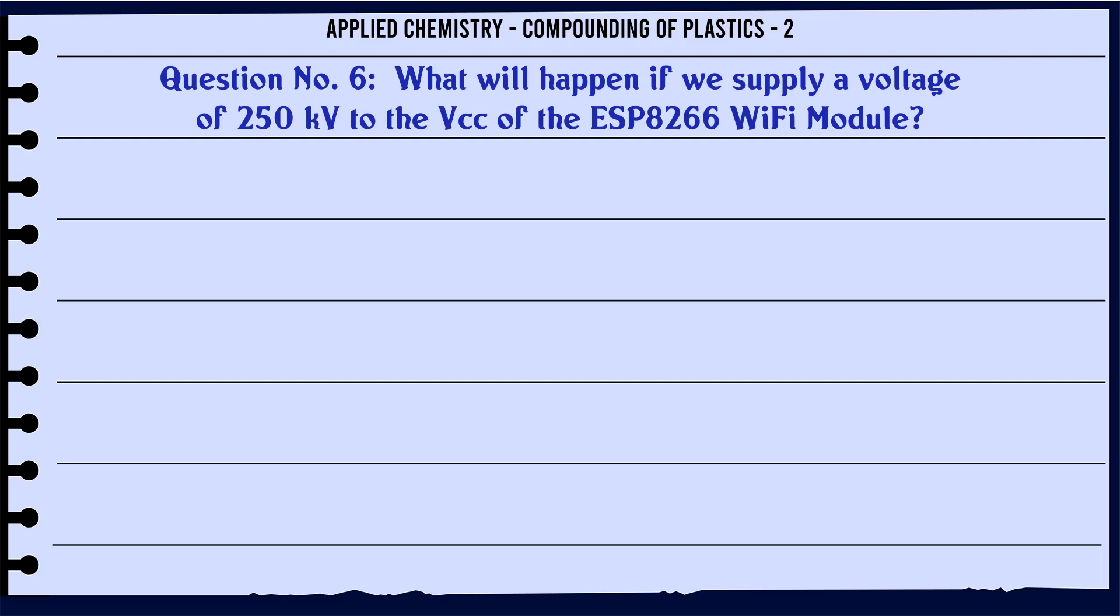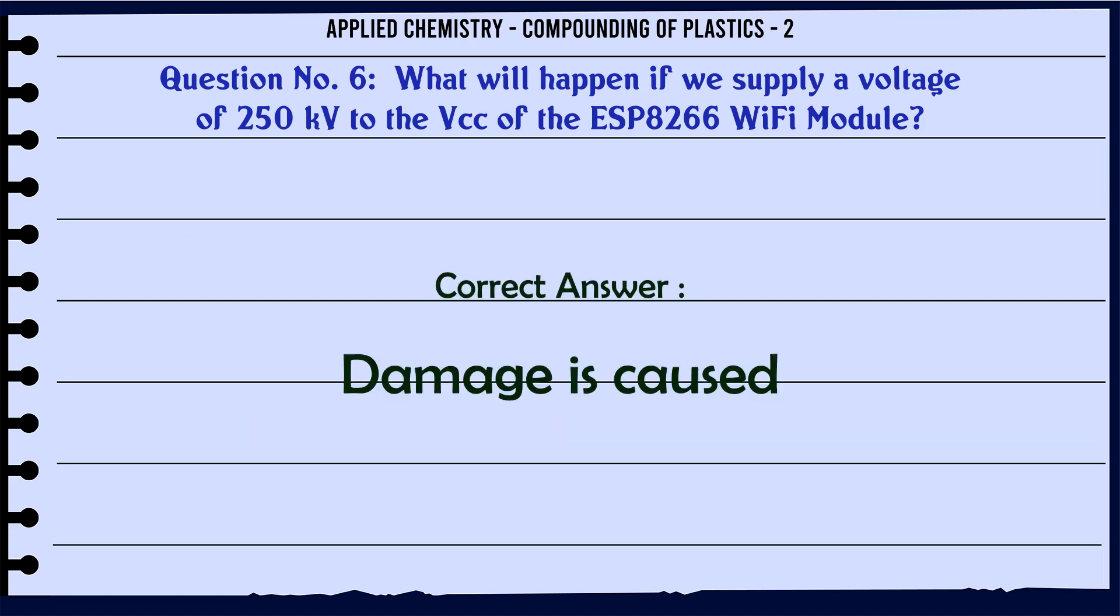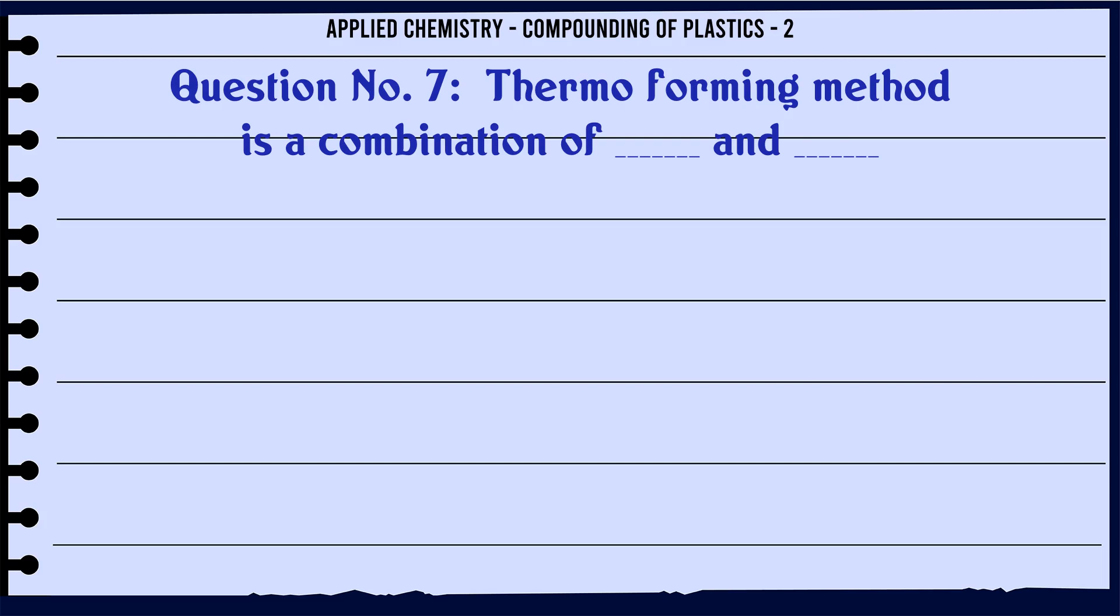What will happen if we supply a voltage of 250 kV to the VCC of the ESP8266 Wi-Fi module? A. Damage is caused, B. Module will shut down, C. Module will not respond for the time the voltage is applied, D. Module will function normally. The correct answer is Damage is caused.